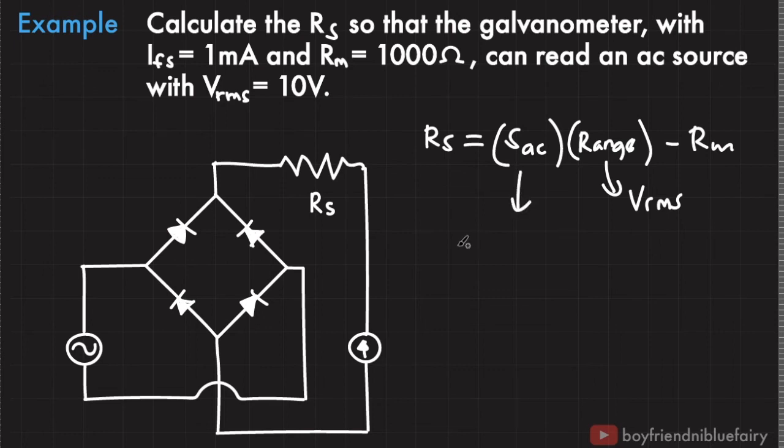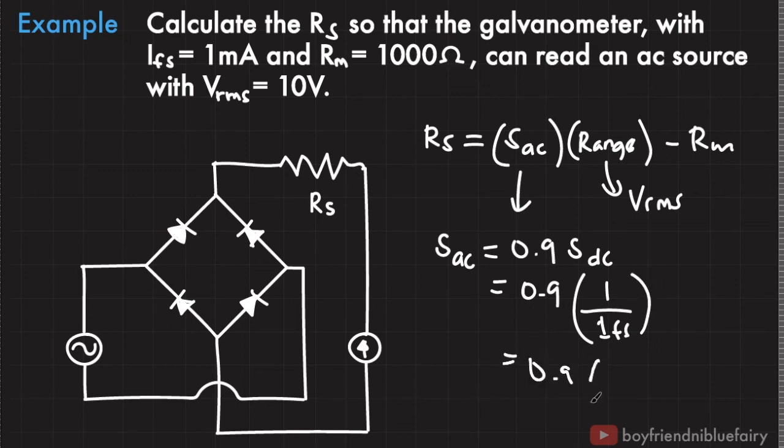For the sensitivity, recall that from our previous derivation, the sensitivity of our AC circuit voltmeter is equal to 0.9 times the sensitivity of a DC voltmeter. And this is equal to 0.9 times, since the sensitivity of DC voltmeter is just 1 over the full-scale deflection current, then this is equal to 0.9 times 1 over 1 mA.